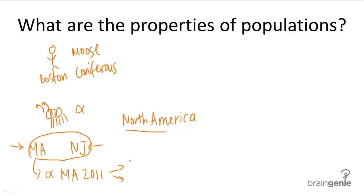You could also break it down more specifically. Let's say you want to talk about the population of alpha ants at Harvard versus the population of alpha ants at MIT. These places are both in Massachusetts — in fact, Harvard and MIT are both in Cambridge. But the population of alpha ants at Harvard has nothing to do with the population at MIT. You can see how the specificity of your location will change the size of your population, and the more specific you get, the more broken down the population becomes.